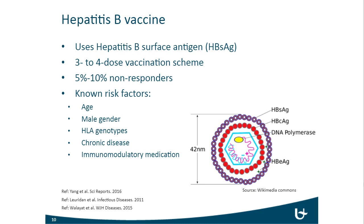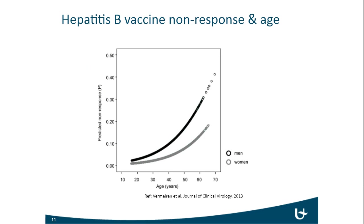A figure from the Journal of Clinical Virology clearly shows the hepatitis B response plotted against age — as age increases, the number of non-responders goes up — as well as a clear difference between men and women.